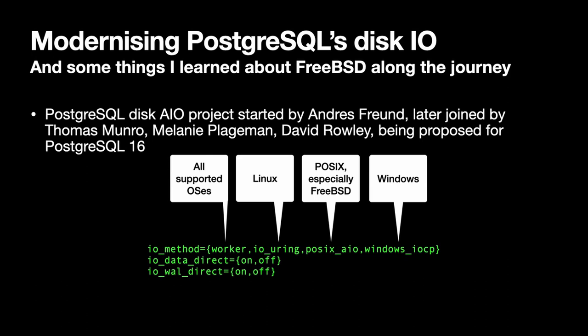If you say IO method equals worker, it works on all operating systems and uses extra worker processes for offloading IO work. Then there are operating system specific options: io_uring for Linux (the original one Andrus began with), POSIX AIO which works in theory on many operating systems (I've mostly been focusing on FreeBSD), a Windows native version, and potentially more in the future.